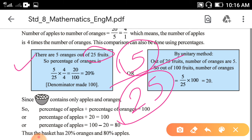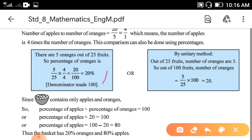To convert this fraction into a percentage, you have to multiply it by 100. So 25 fruits are 100%, and 5 fruits are 20%.